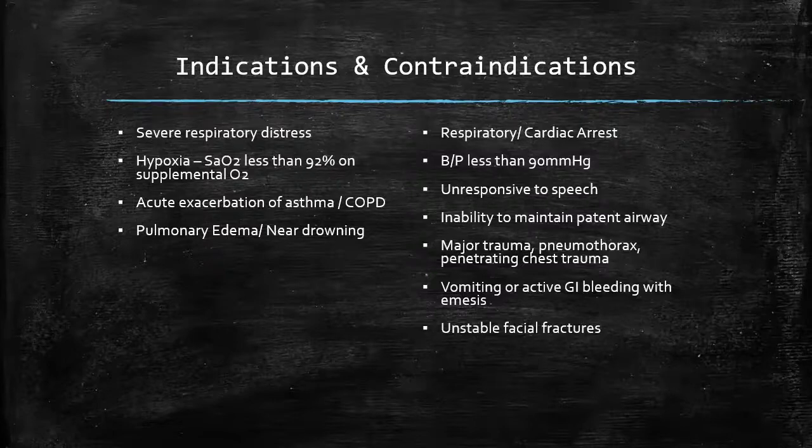We want a patient who is not only breathing on their own but is also able to protect their own airway. If the patient is so altered that they can't protect their own airway, the tongue can fall behind the throat and occlude the airway, or if they vomit, they're not going to know to pull a CPAP away from their face. An inability to maintain a patent airway, major trauma, pneumothorax, or penetrating chest trauma are also contraindications.